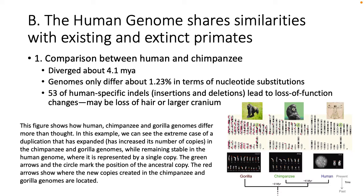The human genome shares similarities with existing as well as some extinct primates. We have compared our genome with chimpanzees, and our last common ancestor was 4.1 million years ago. Our genomes differ about 1.23% in terms of nucleotide substitutions. There have been key differences in insertions and deletions that have led to either loss of function changes — perhaps why we have lost our hair or have a larger cranium. This figure shows how human, chimpanzee, and gorilla genomes differ more than we thought. We can see an extreme case of a duplication expanded in the chimpanzee and gorilla genomes, while it remains a single copy in the human genome.